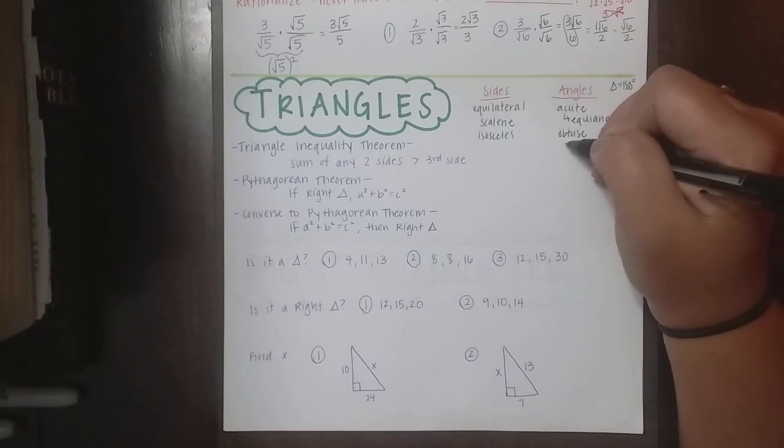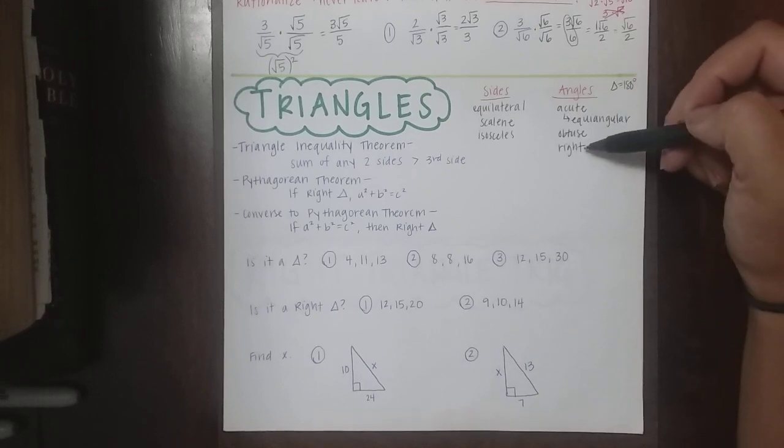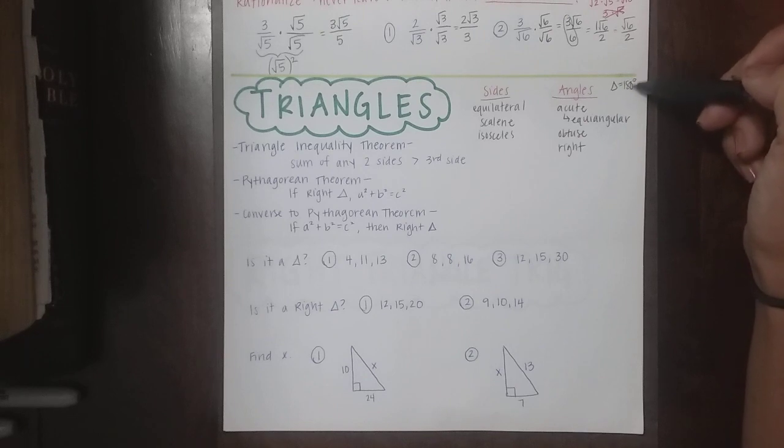And then if I have one 90 degree angle, that means it's going to be a right triangle. And that's the same idea. If I have 90 degrees for one angle, I can't have another one or I'll hit 180 before I get three angles.